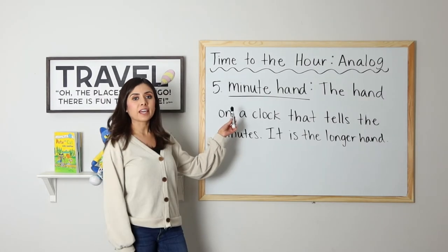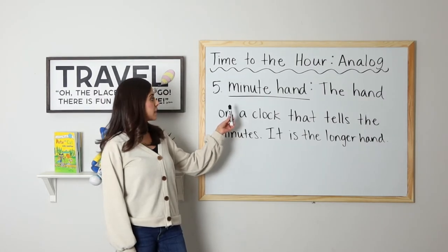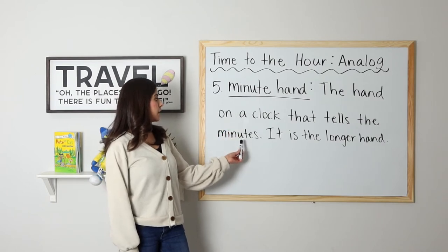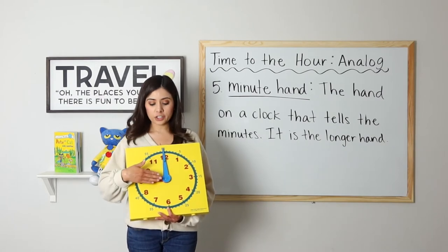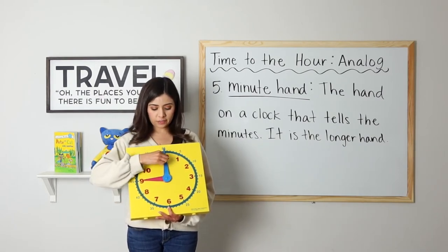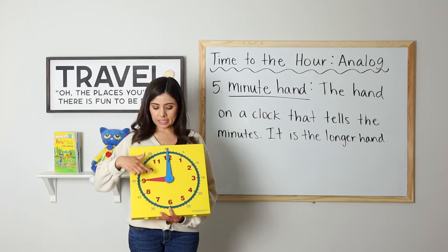Number five, minute hand. The minute hand is the hand on a clock that tells the minutes. It is the longer hand. So the minute hand is the longer hand. So 12 is our starting point. It is nine o'clock.